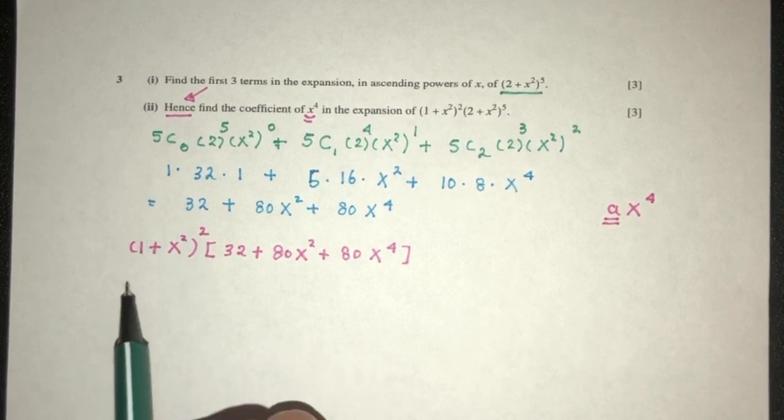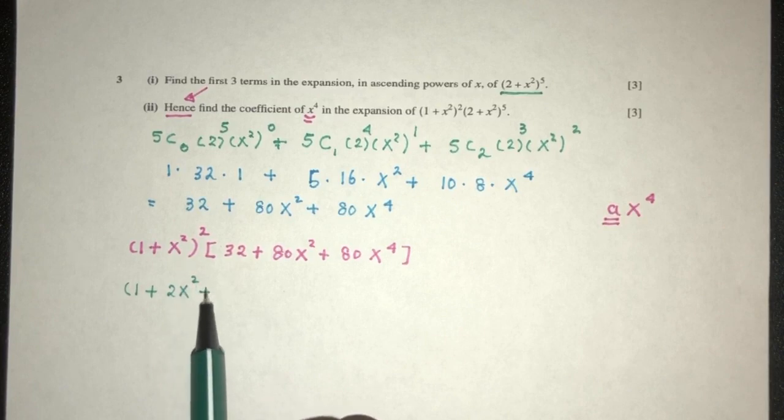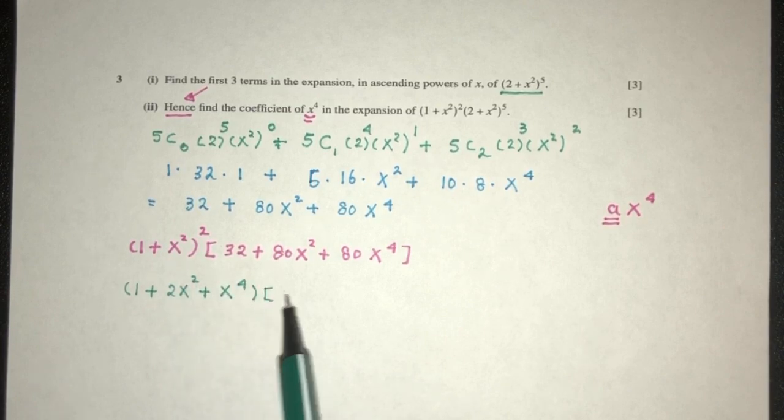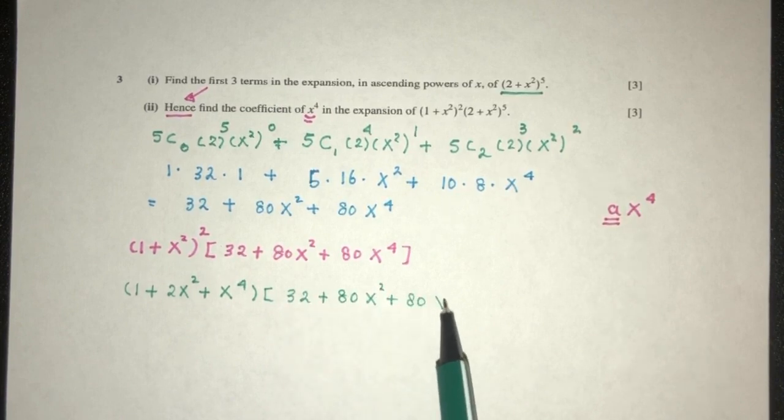First, let's expand this bracket. You will have 1 plus 2 x square, plus x power 4. Multiply by 32 plus 80 x squared plus 80 x power 4.